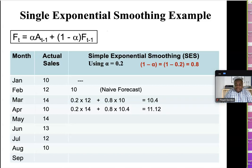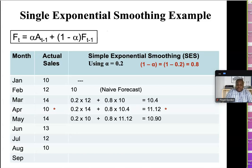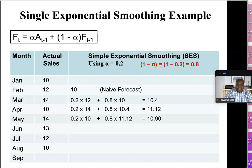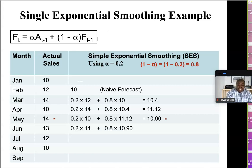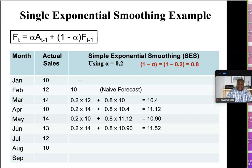For May: alpha 0.2 times the previous actual 10, plus 0.8 times the previous forecast 11.12 — this works out to a forecast of 10.90. Then for June: 0.2 times the actual for May which is 14, plus 0.8 times the previous forecast 10.90, and that gives us 11.52.